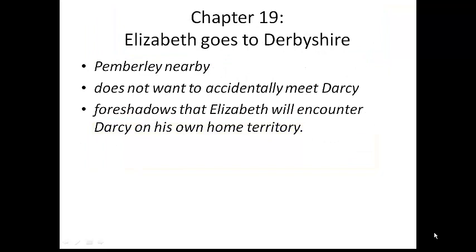We also see that Elizabeth is intending to go to Derbyshire, which is very near Pemberley — where Darcy lives — and she does not want to accidentally bump into him. This does foreshadow that Elizabeth actually will encounter Darcy on his home territory, where the situation clearly will be different. This is how Volume 2 concludes.